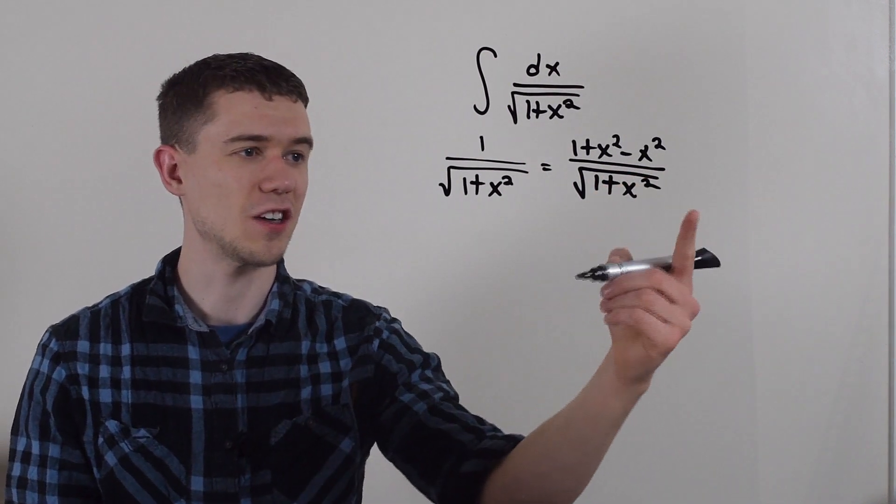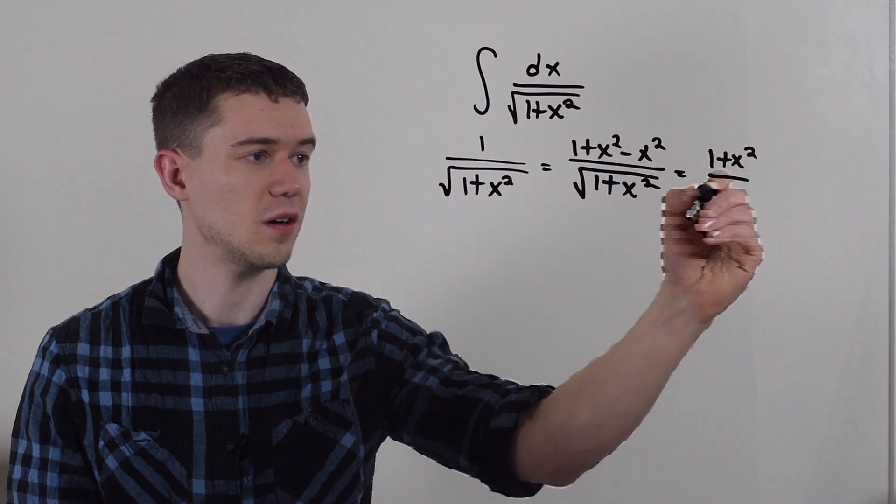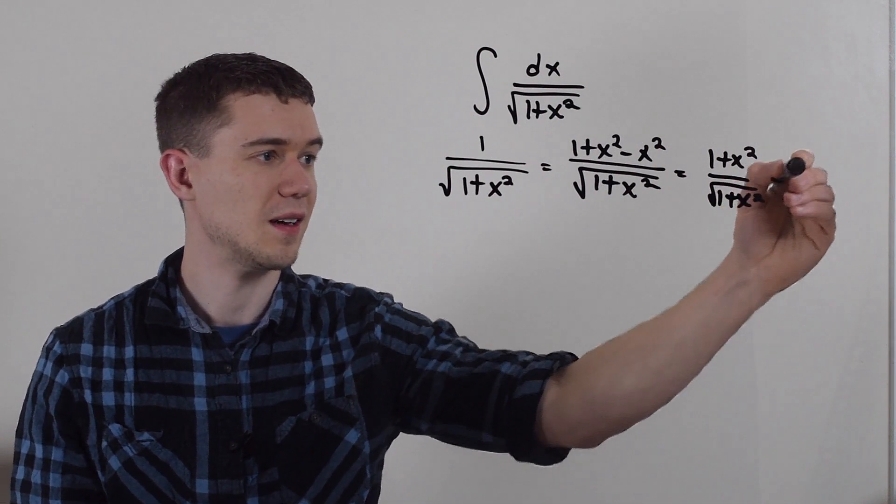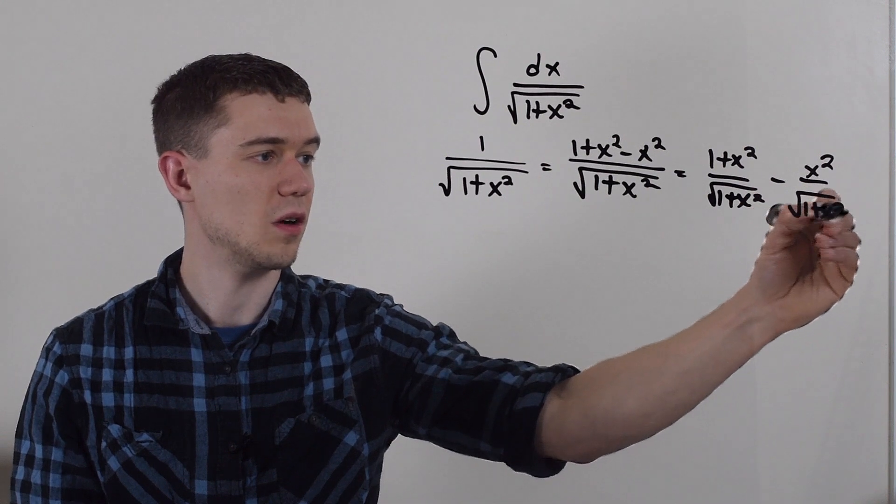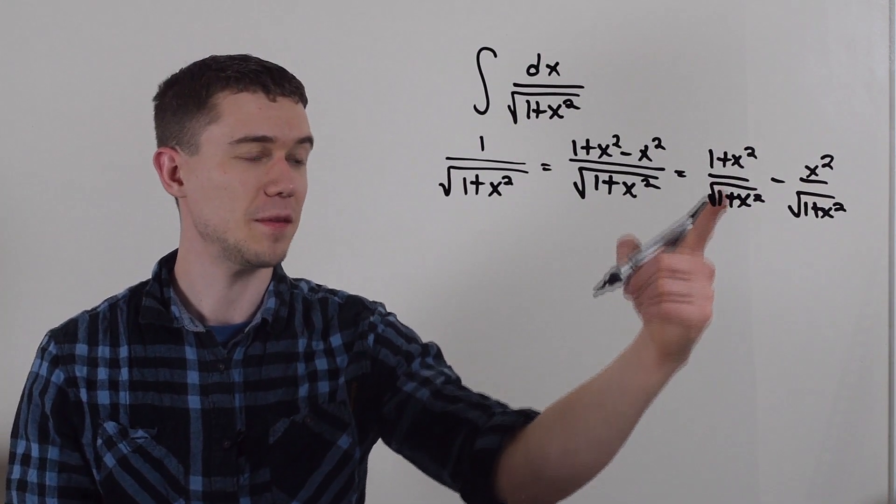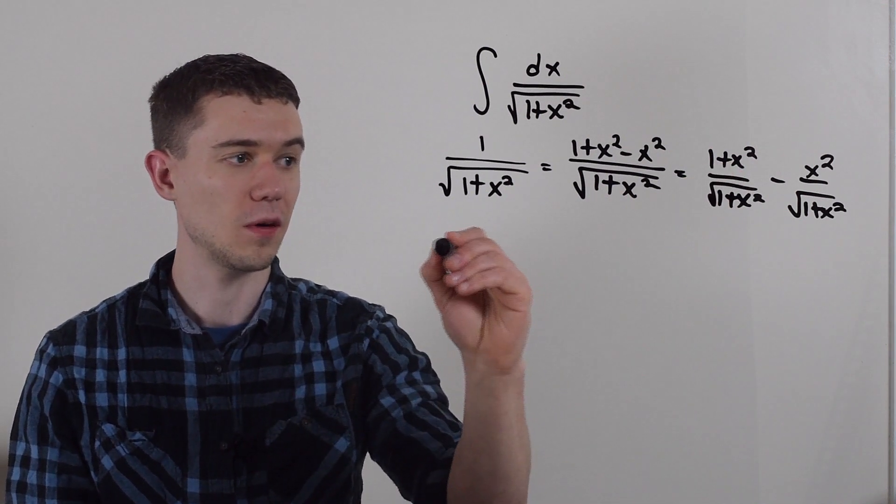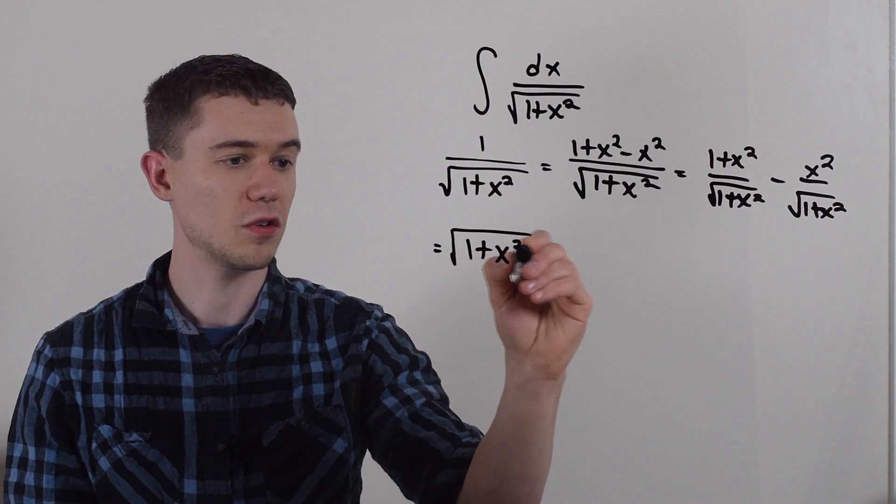And now I'm going to split this fraction up. 1 plus x squared over 1 plus x squared rooted minus x squared over root 1 plus x squared. And this bit simplifies. Properties of exponents, this is the same thing. So something to the first power over something to the 1 half power, that's just going to give me that thing to the 1 half power or square rooted.